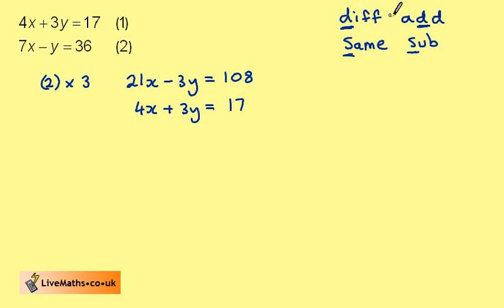Here with them being different then, we're going to add the two equations. This gives us 25x, the y's disappear, is equal to 125. And dividing both sides by 25 gives x equals 5.